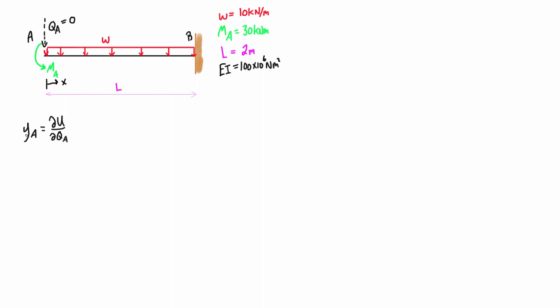You might see this in general terms where it's YJ is equal to the partial derivative with respect to QJ. We already know that we're looking for point A, so we might as well put in a meaningful subscript with that.